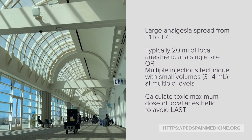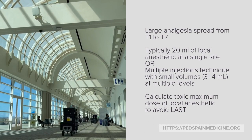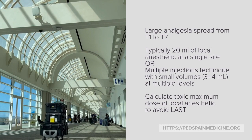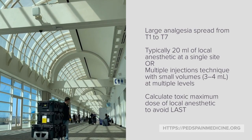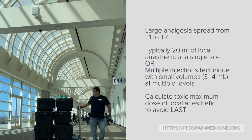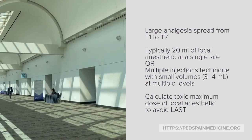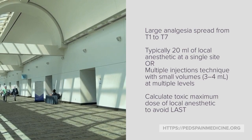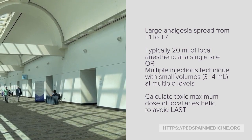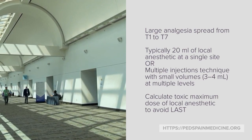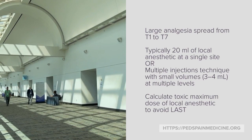We can achieve large analgesic spread from T1 to T7. Typically 20 mL of local anesthetic are injected at a single site, such as T3, or multiple injections are given with smaller volumes. Be careful to avoid LAST — local anesthetic systemic toxicity.